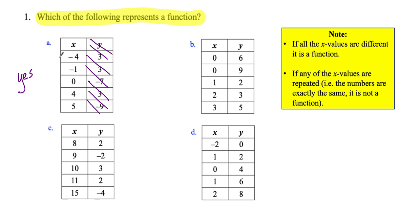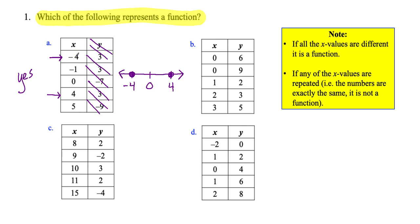Now, some students get confused and say negative four and four are the same number. Well, they're not — they're opposites of each other. Think of a number line: negative four is to the left of zero, and positive four is to the right. If I were to plot a point at negative four, it would be here, and positive four would be here. They're two distinct numbers. So the first one is a function.